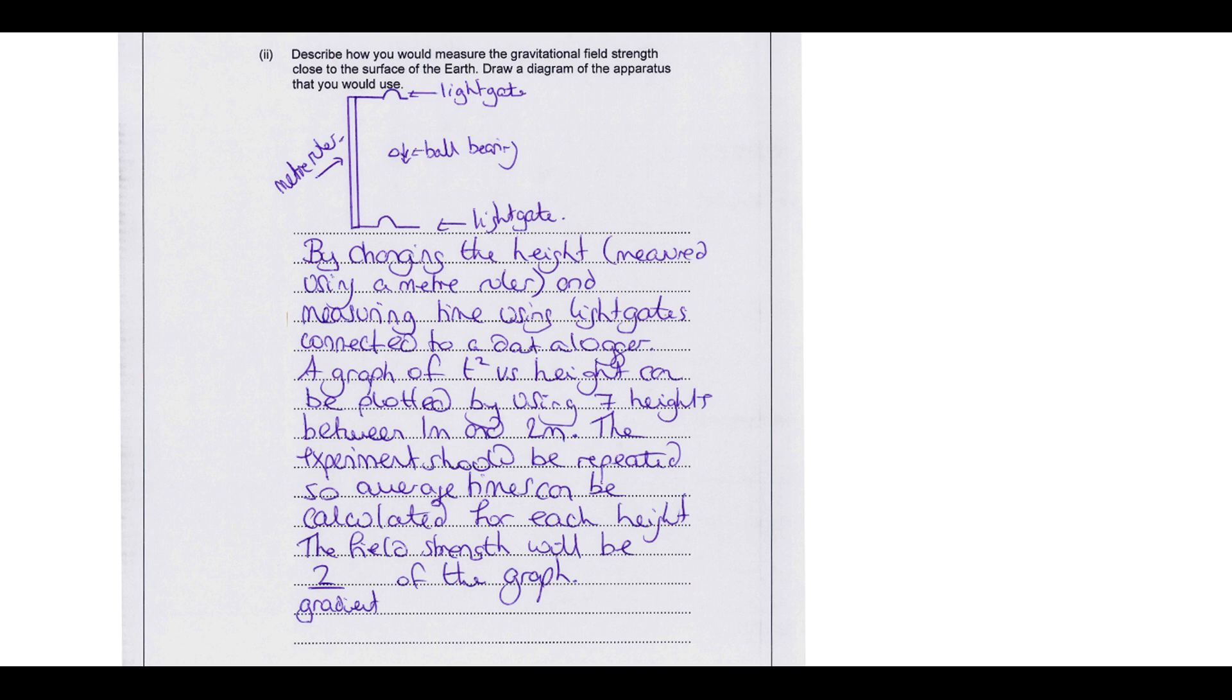So what you're going to do is you're going to change the height and you're going to measure the time, and your light gates will be connected to a data logger so that would give you the time taken for that distance. And you plot a graph of t squared versus height, and the reason for that is it comes from this equation here: half a t squared. If you drop it, u is zero, so we can get rid of that. So that's why we've got a graph t squared against s there.